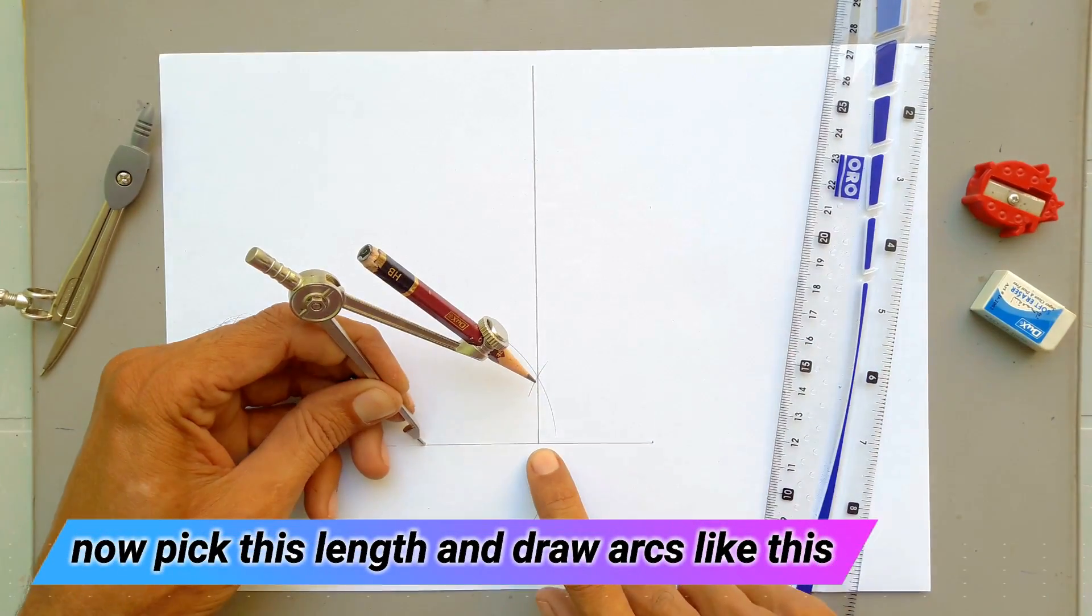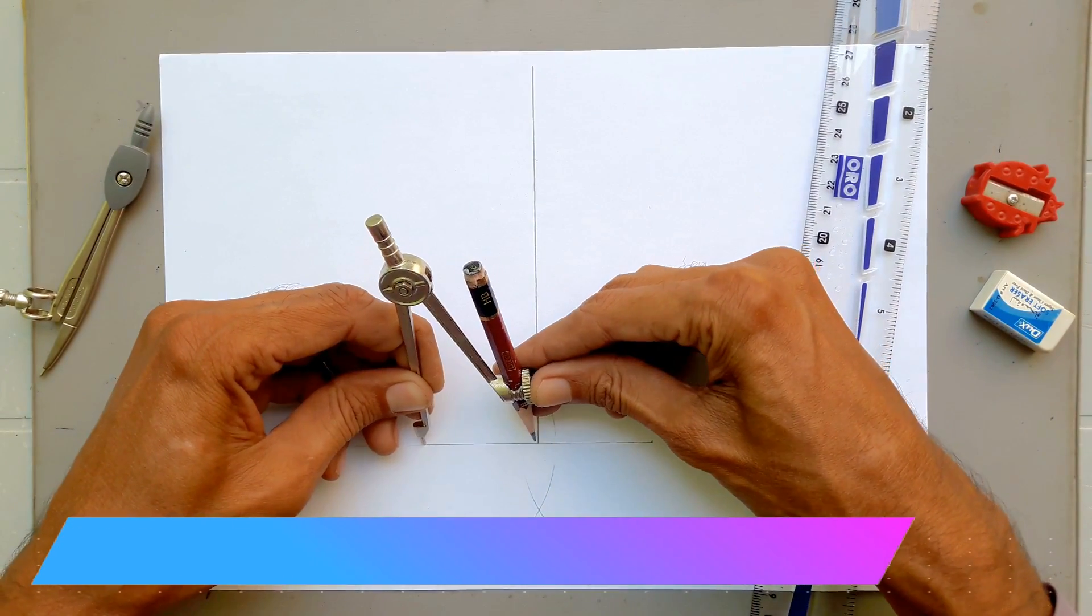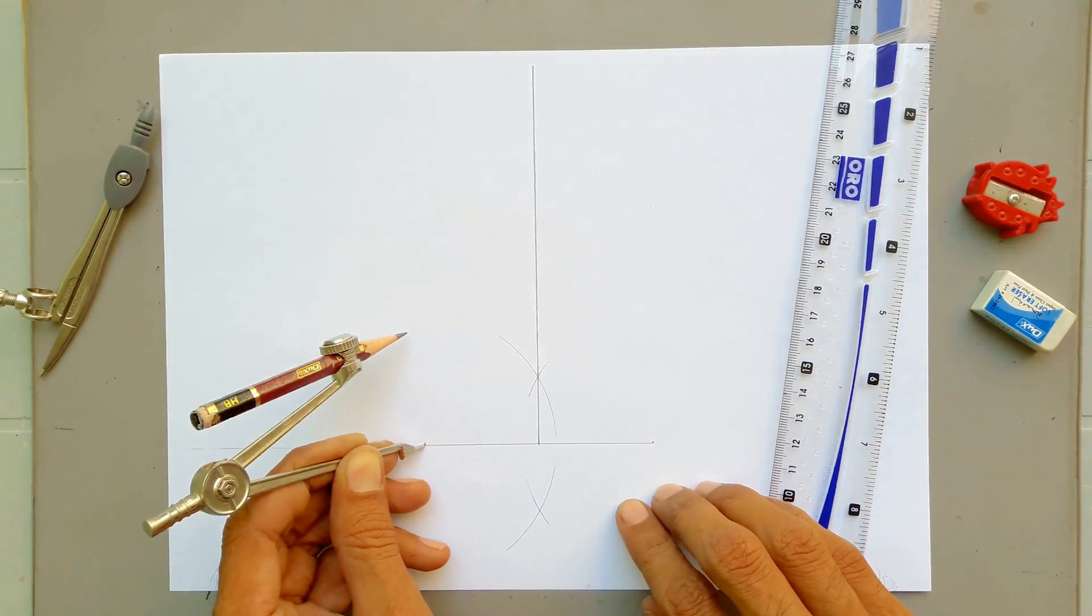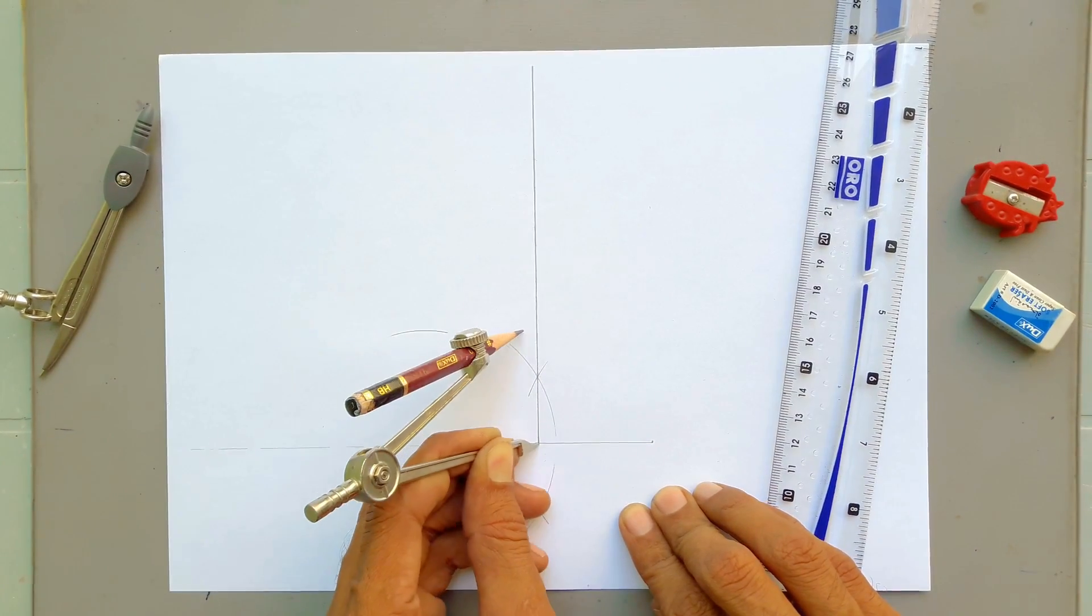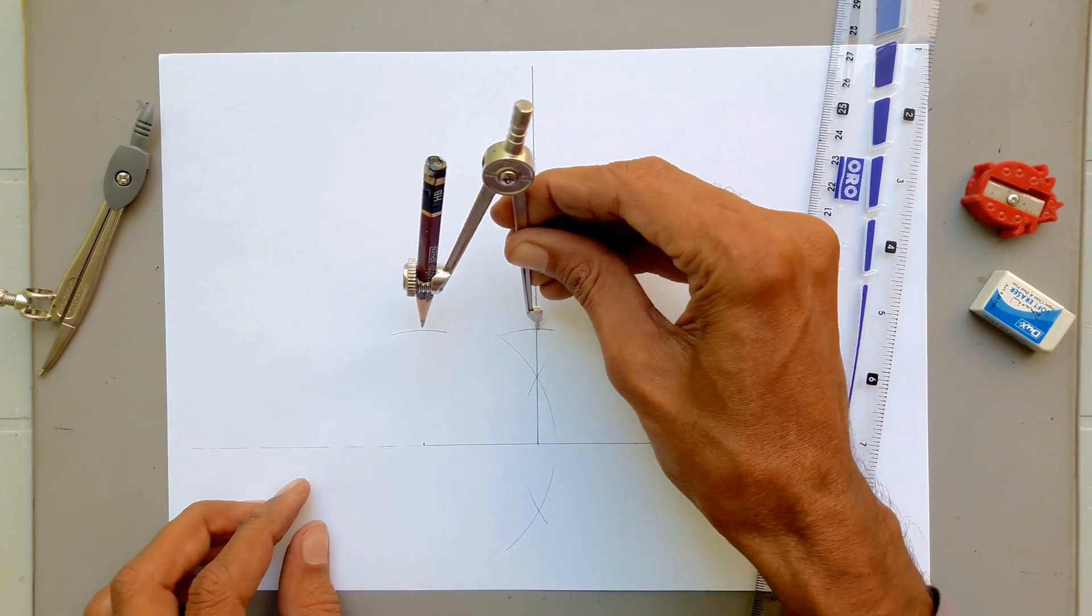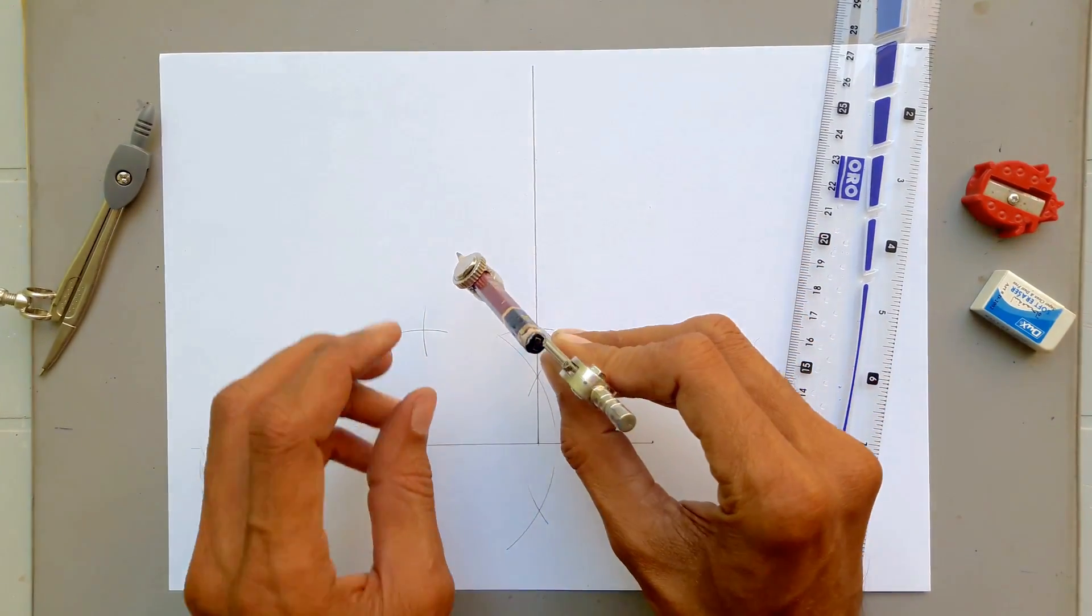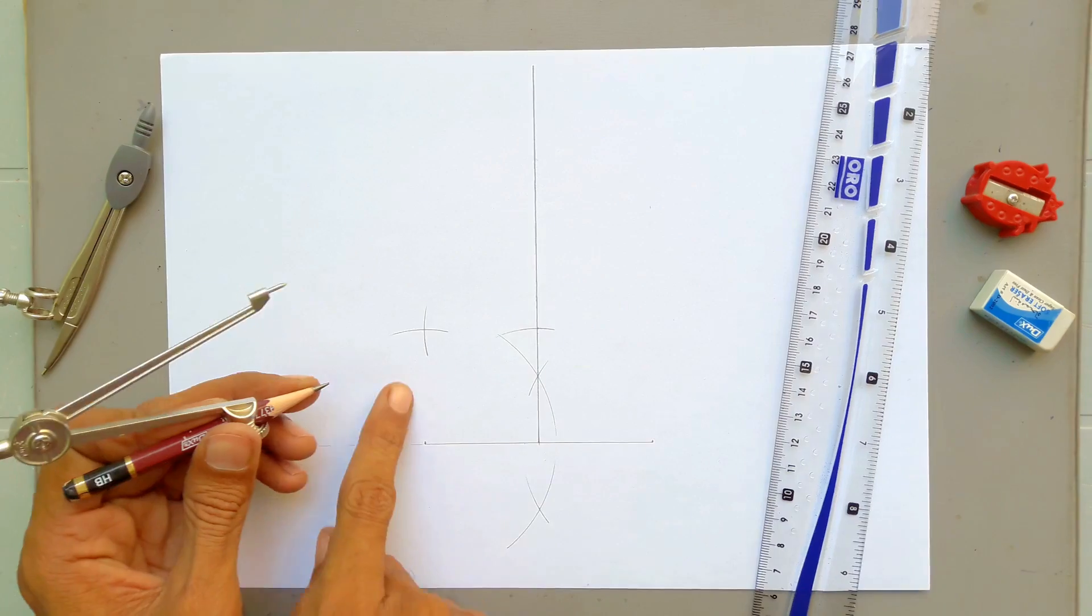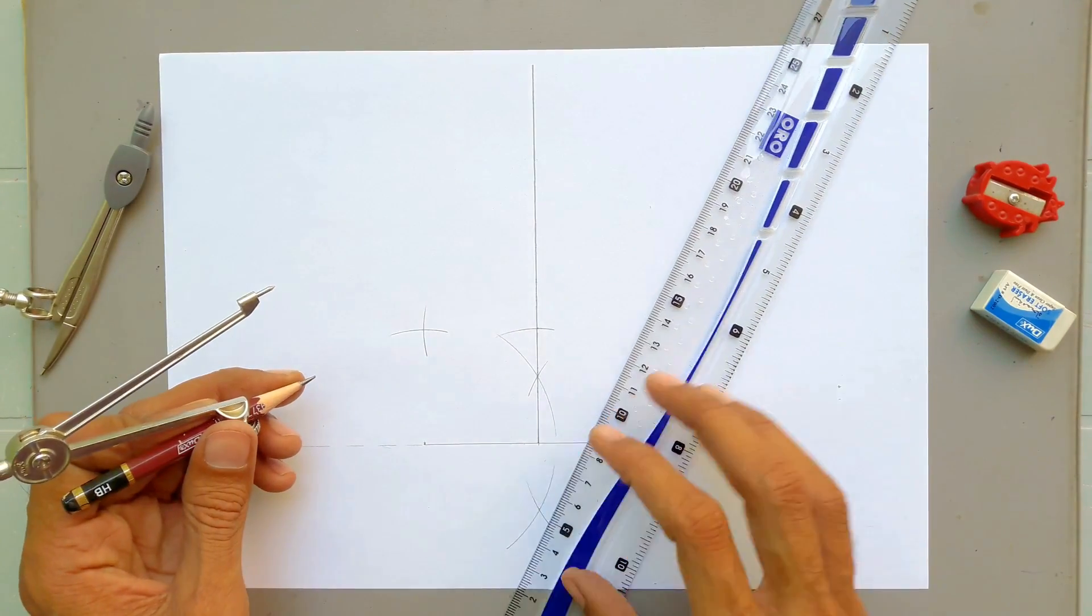After that pick this length and draw arcs like this. We've got another point, so draw a line like this.